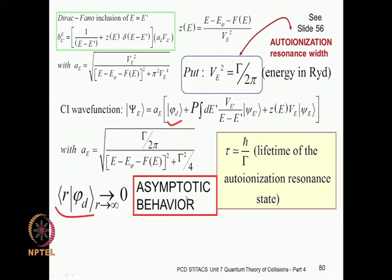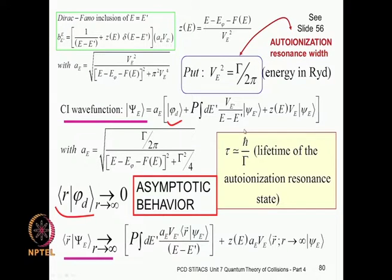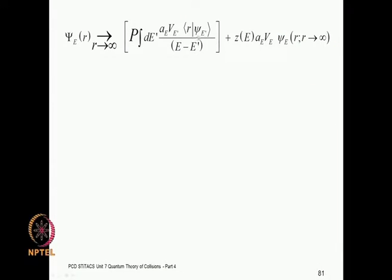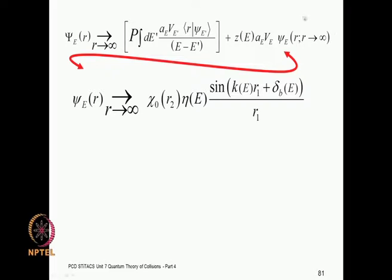We can drop that term off. We are left with two terms, one of which we have some familiarity with from scattering theory — it is the principal value term. So the r-tending-to-infinity solution is given by the remaining two terms. These two terms describe the asymptotic wave functions: one is the de Broglie–Schrödinger wave function in coordinate representation, and the other, coming from scattering theory, is the usual sinusoidal function divided by r plus the background phase shift.